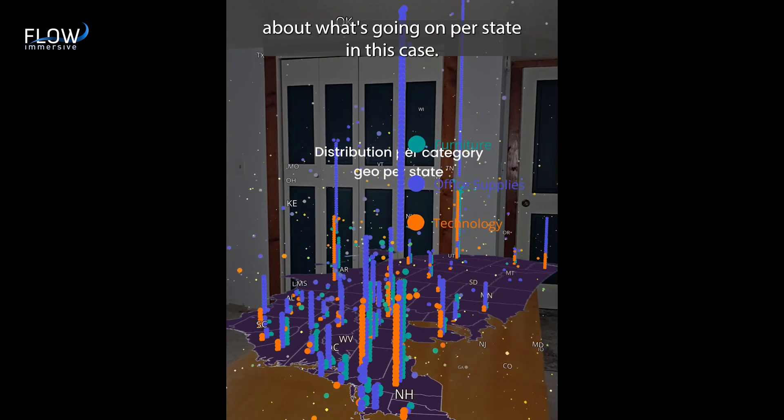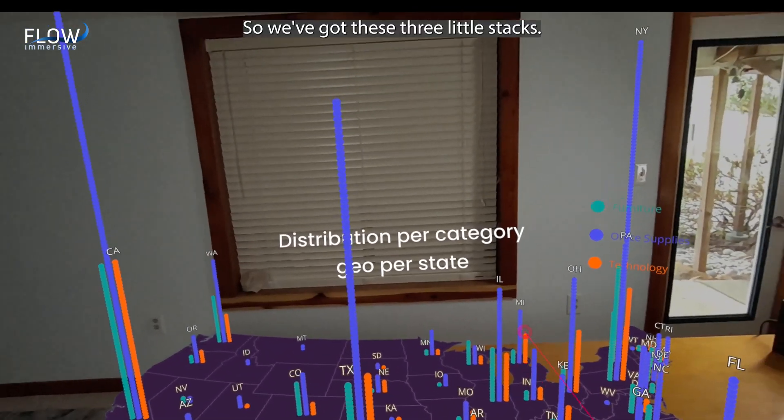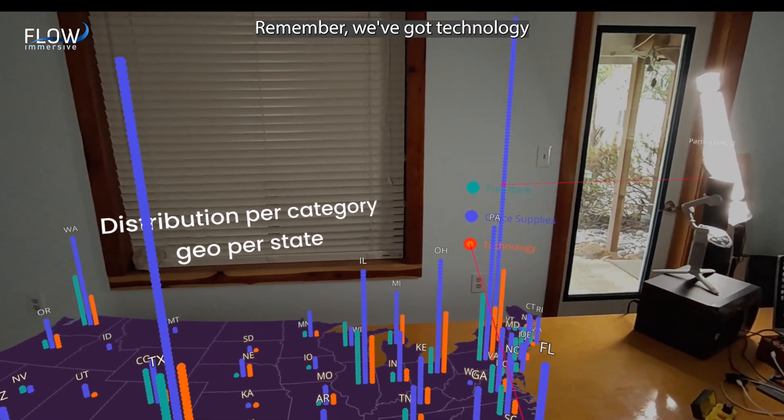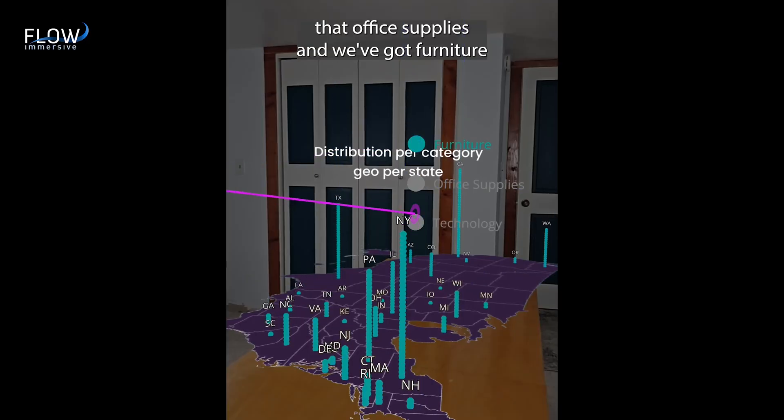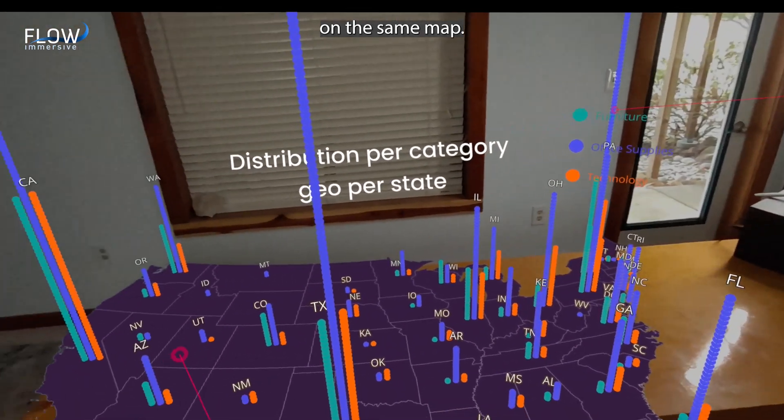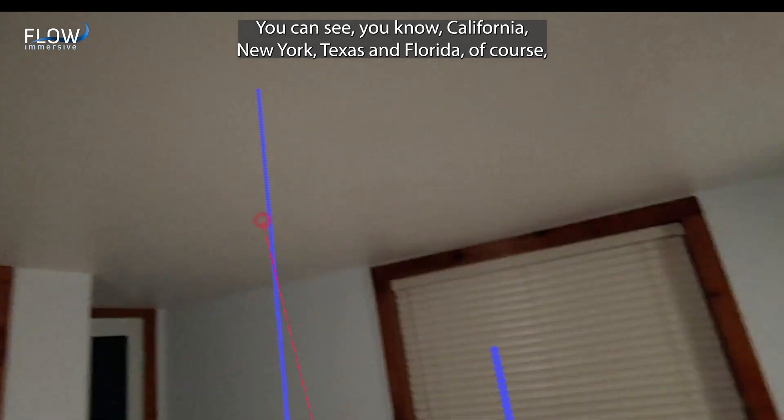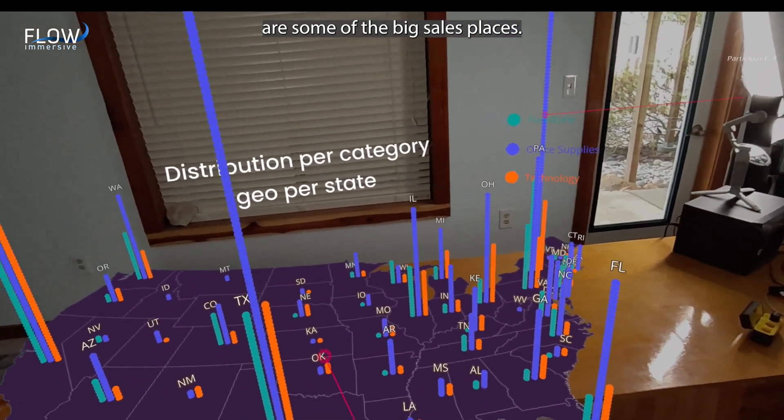Now let's just understand a little bit more about what's going on per state in this case. So we've got these three little stacks. Remember we've got technology, got office supplies, and we've got furniture and we put all of those stacks on the same map. So you can get a sense of the structure. You can see California, New York, Texas, and Florida, of course, are some of the big sales places.